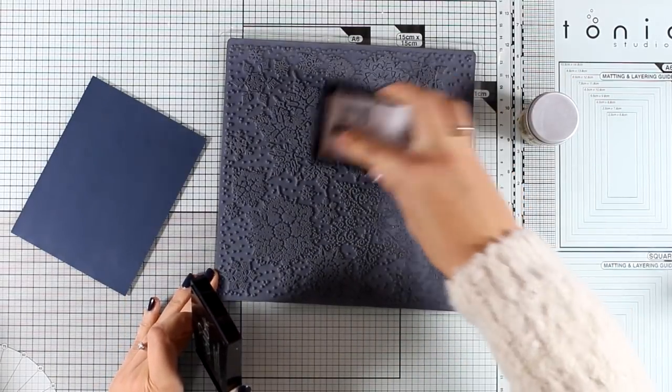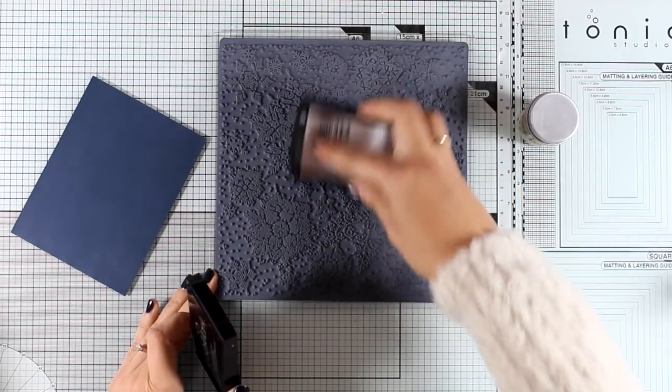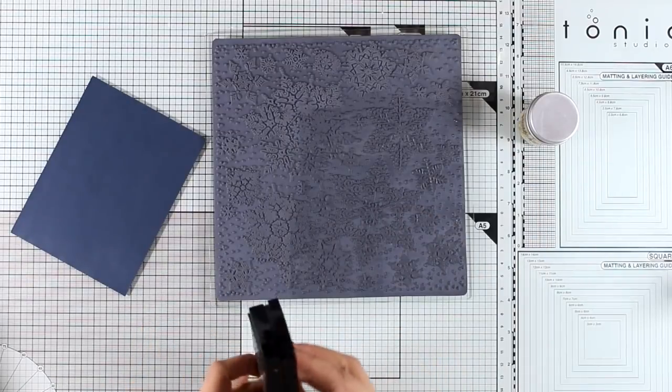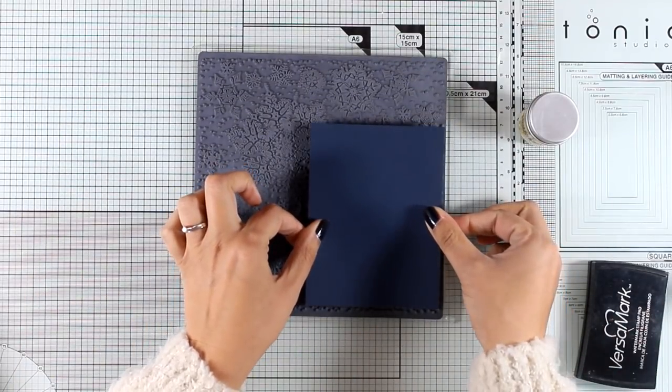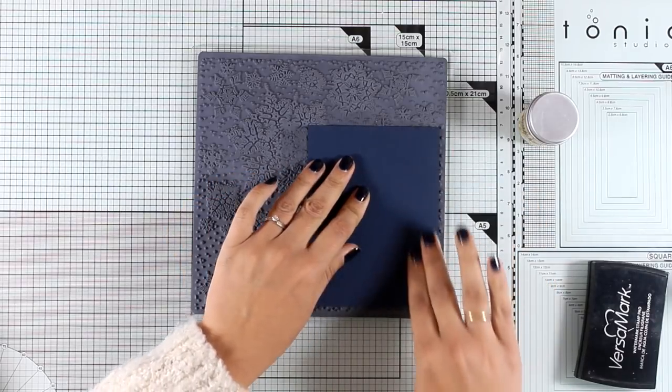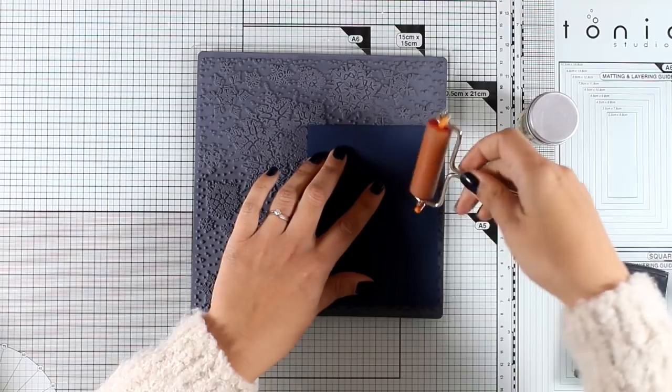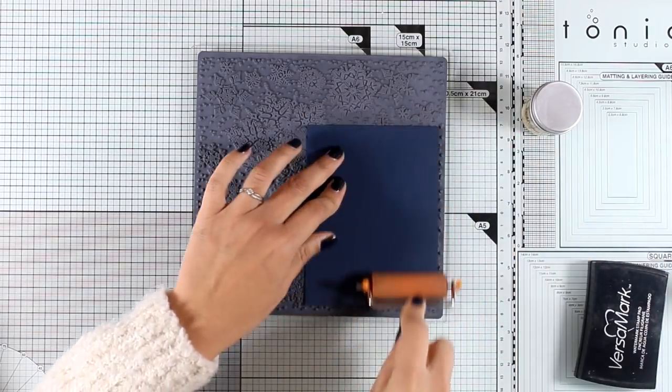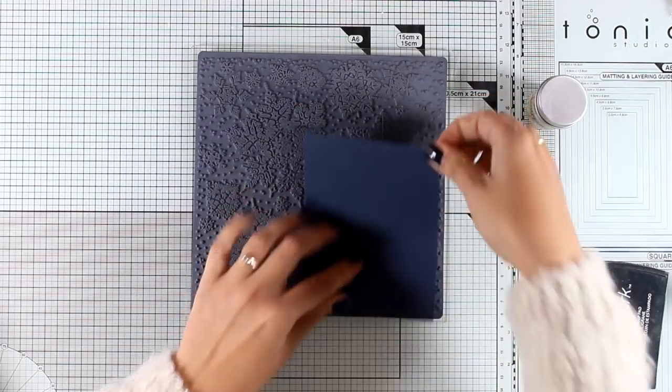So I'm going to ink up one area of my huge stamp using my Versamark, and then I'm going to apply my paper on top of it. Now you can press it with your fingers. I like to use a brayer. I have a small brayer here, so I'm just going to make sure that everything is pressed nicely on top of my stamp. I'm going to peel it off and check that everything is okay.